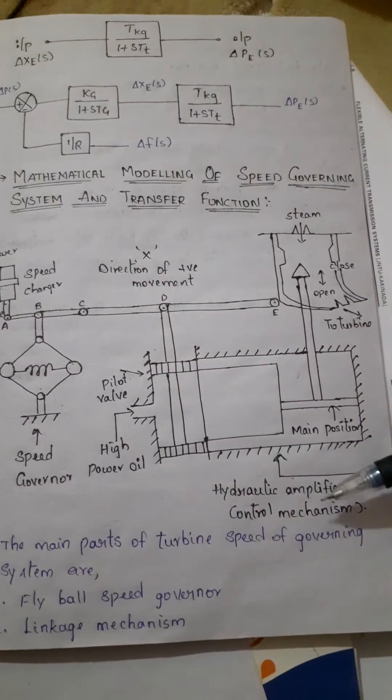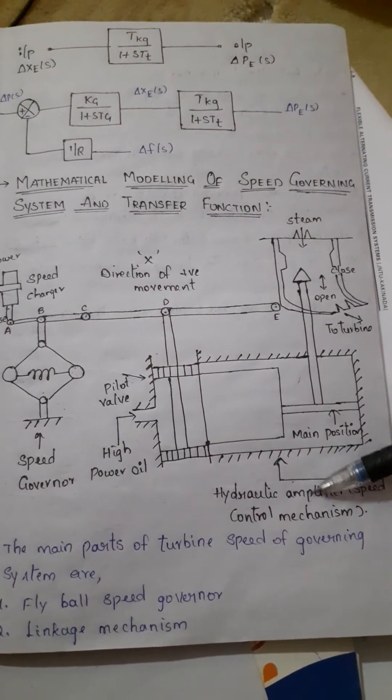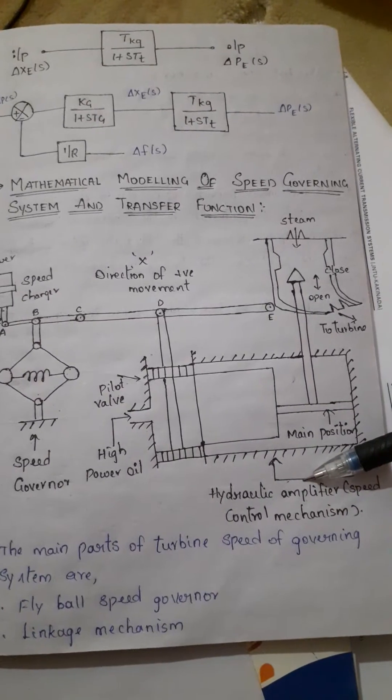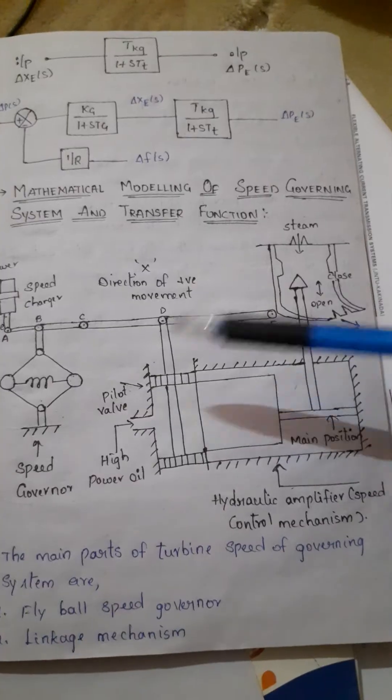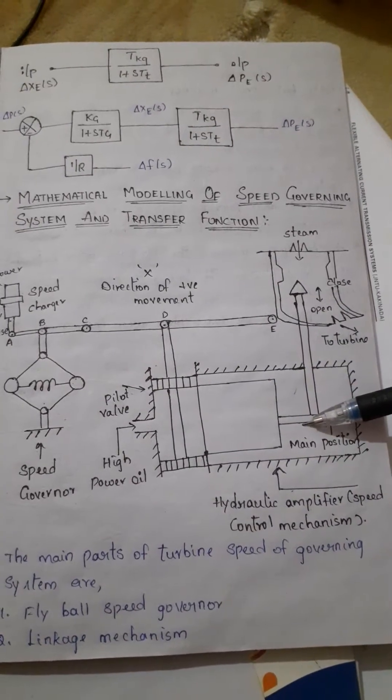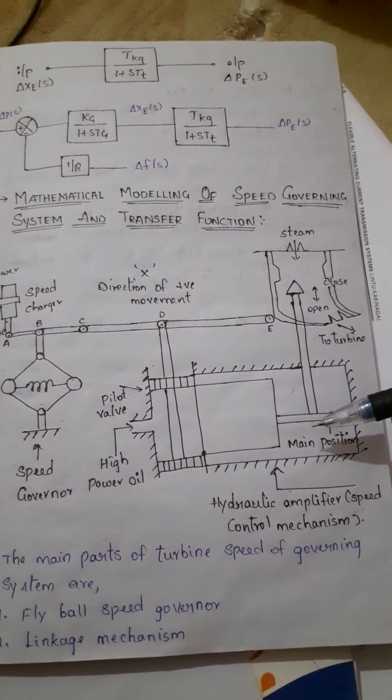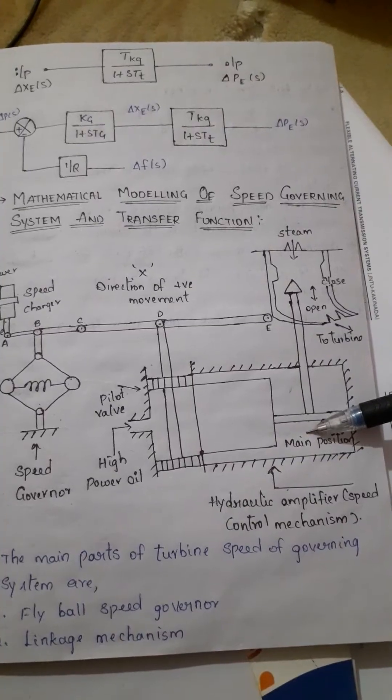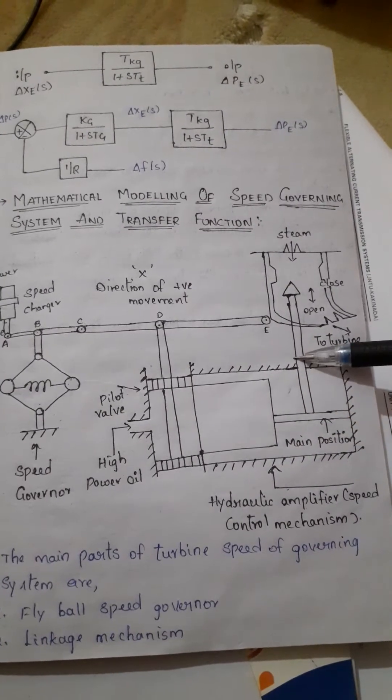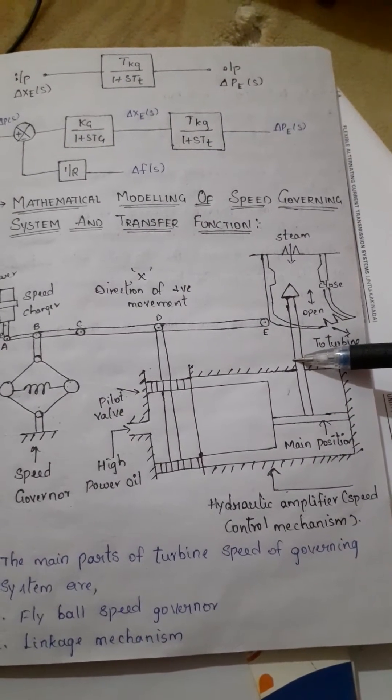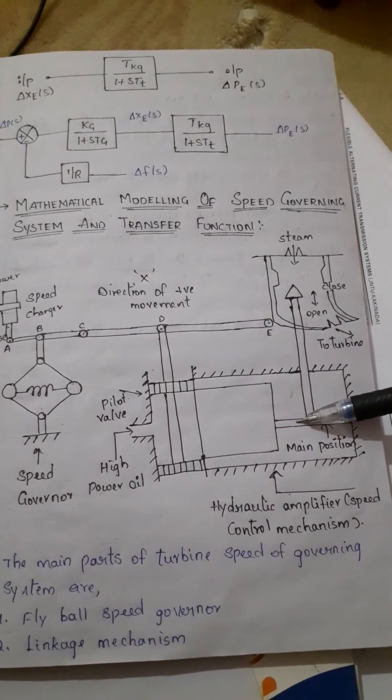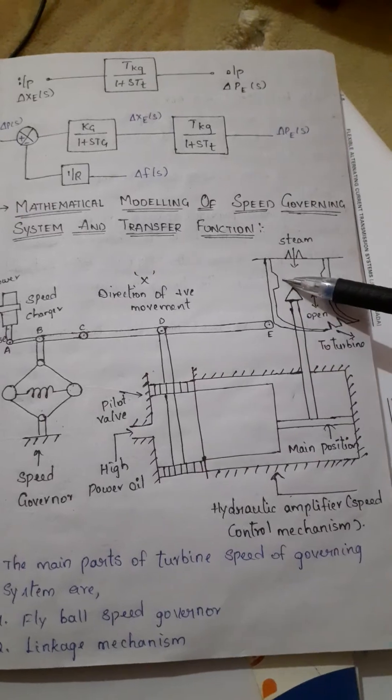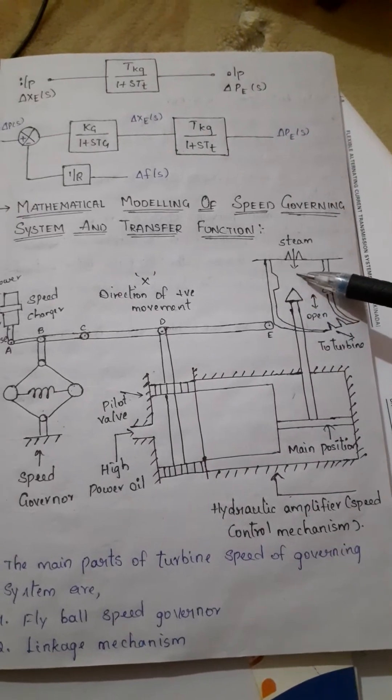Next is the hydraulic amplifier. In hydraulic amplifier there are two main parts: one is the pilot valve and another one is the main piston. The lower pilot valve movement is converted into higher level piston valve movement. This is necessary in order to open or close the steam valve against high pressure.